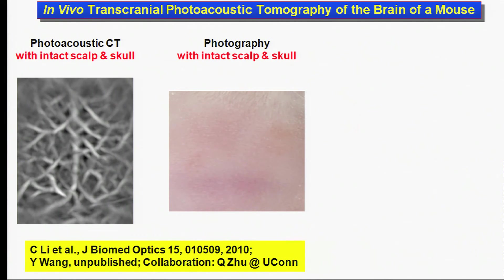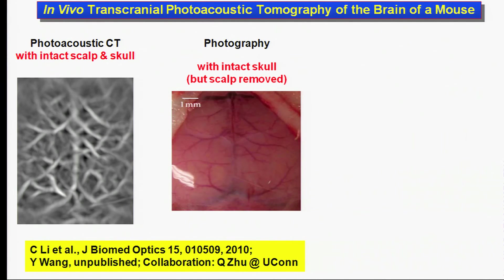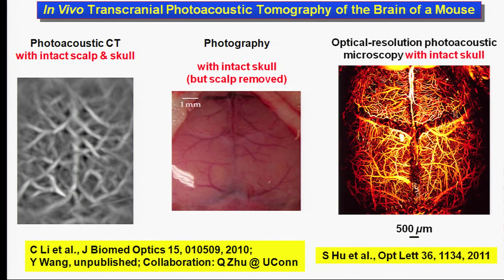Through an intact scalp, brain cortical vessels in small animals were imaged by photoacoustic computed tomography. Through an intact skull without skin, even finer capillary-level resolution was provided by photoacoustic microscopy.